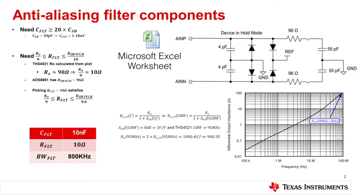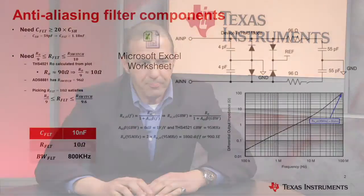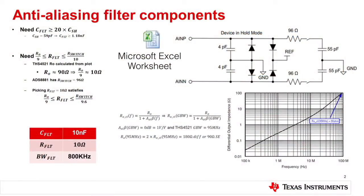When we do the math, it works out that R needs to be about 10 ohms. So we take that 10 ohms and that 1.18 nanofarad capacitor, and the cutoff frequency works out to be 800 kilohertz.